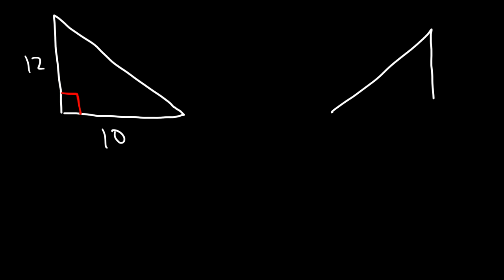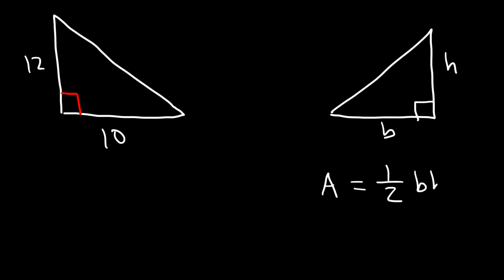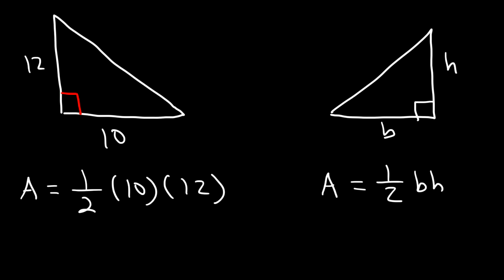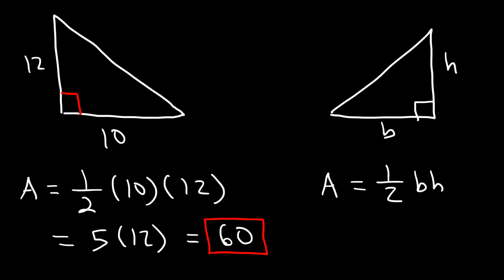The first thing you need to know is the formula to use. For any right triangle, or any triangle that you know the base and the height of, the area is simply one-half base times height. So for this example, it's one-half times the base of 10 multiplied by a height of 12. Half of 10 is 5, and 5 times 12 is 60. So that's the area of the right triangle — it's 60 square units.